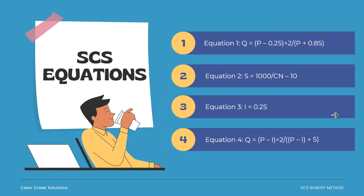What are the equations of the SCS empirical method? The first equation is Q equals P minus 0.2S, squared, over P plus 0.8S. The second equation is S equals 1,000 divided by the curve number minus 10. The third equation is I equals 0.2S. The fourth equation is Q equals P minus I, squared, divided by P minus I plus S. Those are the equations at our disposal.